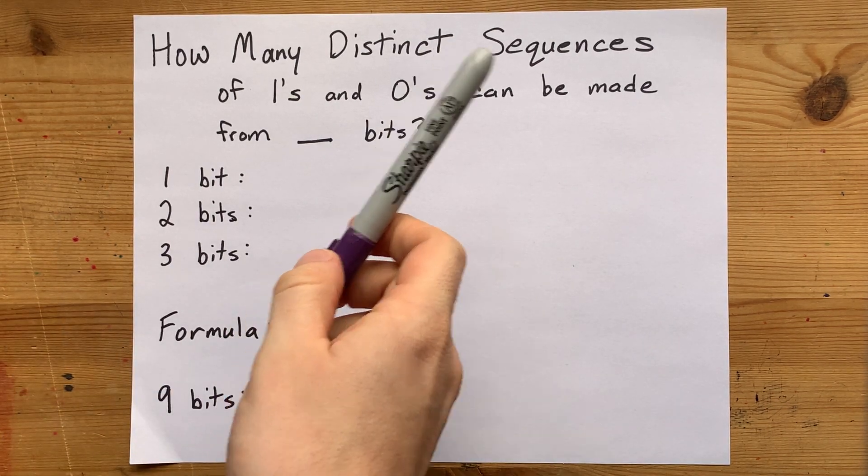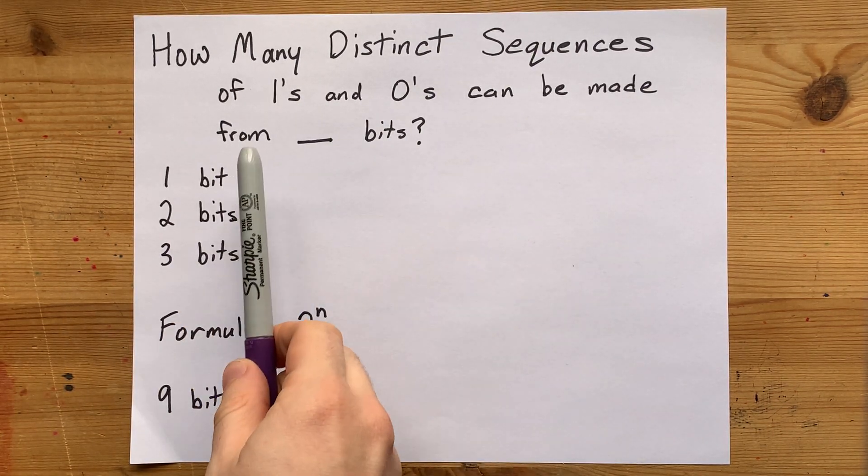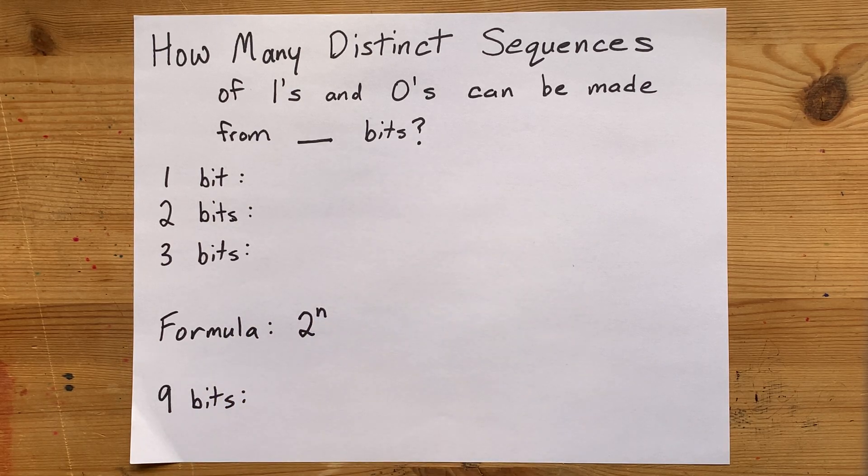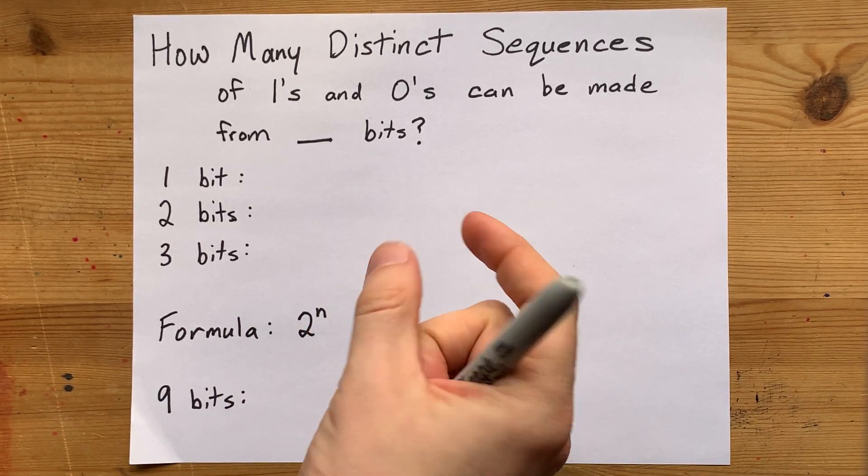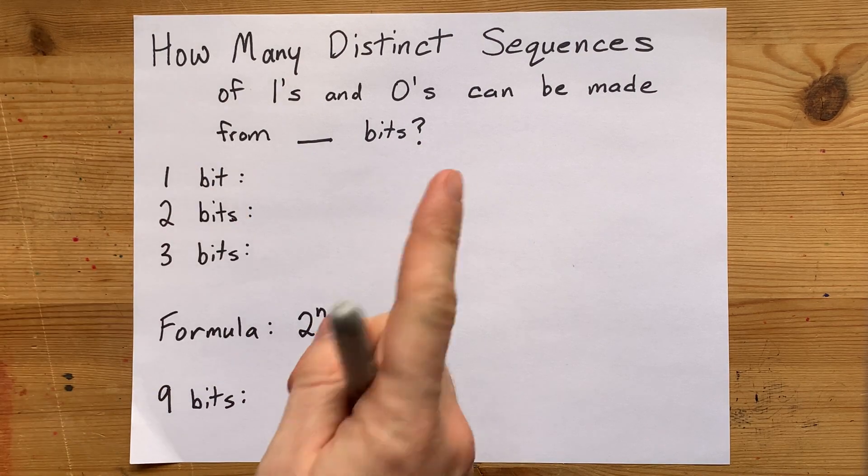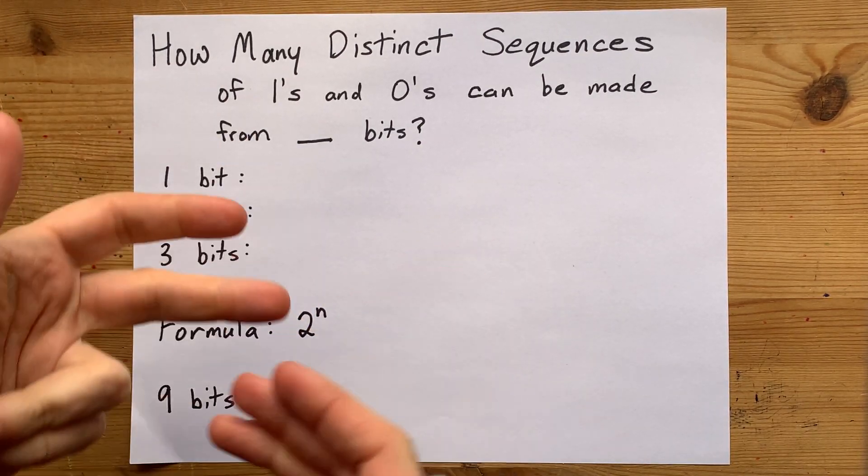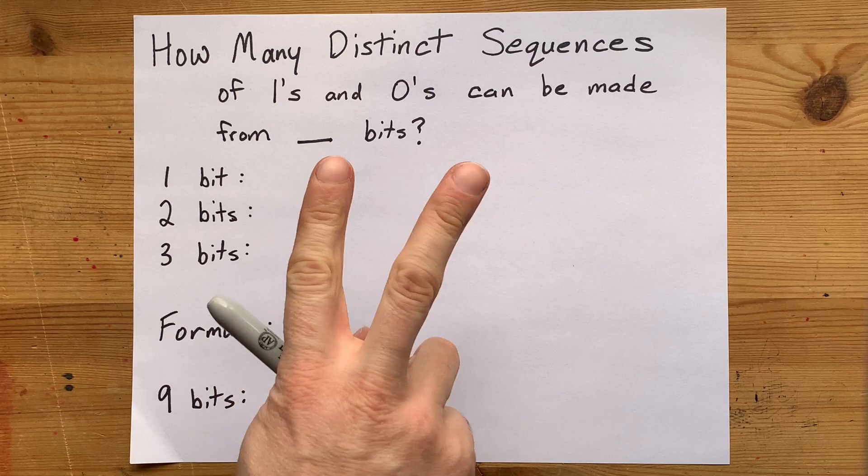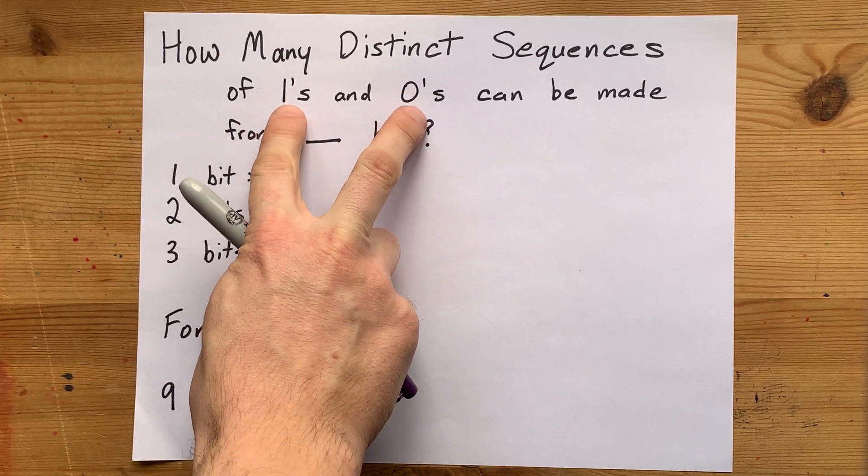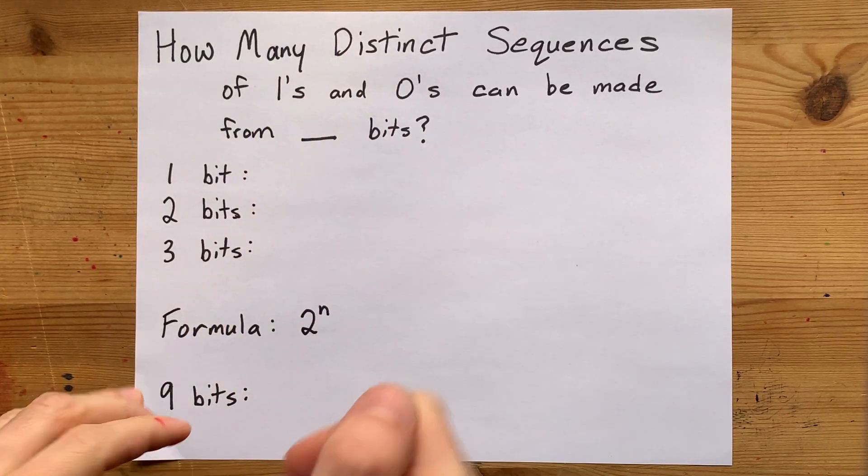How many distinct sequences of 1s and 0s can be made from a certain number of bits? Well, a bit is like a binary switch, 0 or 1, for off and on. Sometimes it's north and south poles of a magnet, but there's only two options for each of the bits themselves.